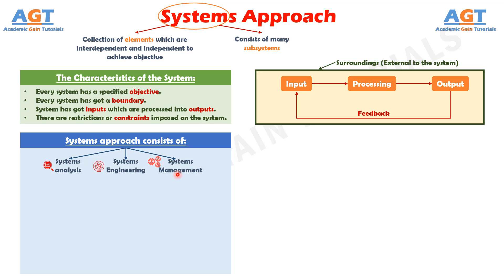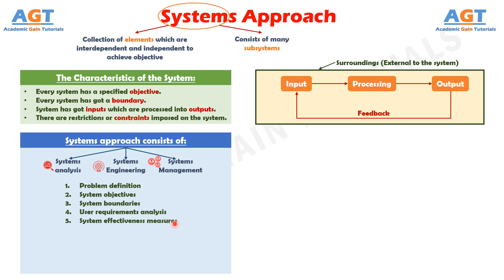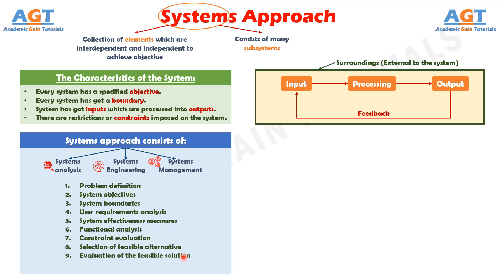Systems analysis consists of problem definition, system objectives, system boundaries, user requirements analysis, system effectiveness measures, functional analysis, constraint evaluation, selection of feasible alternatives, evaluation of the feasible solution against prefixed criteria, and selection of the best alternative.